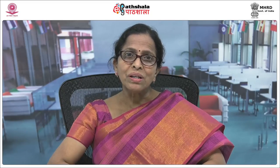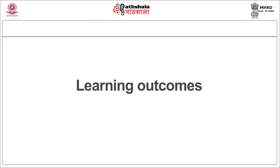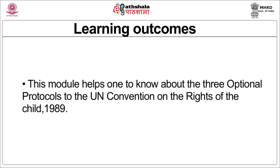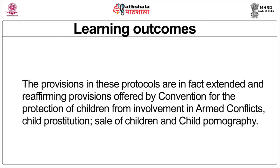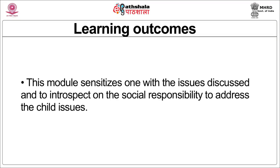That comes under the paper called Child Rights. Now we shall deal with the learning outcomes. This module helps one to know about the three optional protocols to the UN Convention on the Rights of the Child, 1989. The provisions in these protocols are extended and reaffirming provisions offered by the Convention for the protection of children from involvement in armed conflicts, child prostitution, sale of children and child pornography. This module also sensitizes one with the issues discussed and to introspect on the social responsibility to address child issues.